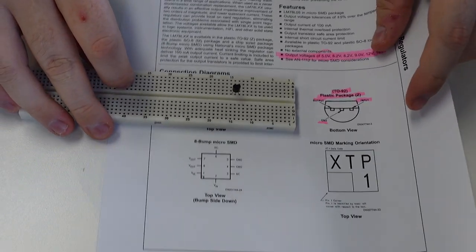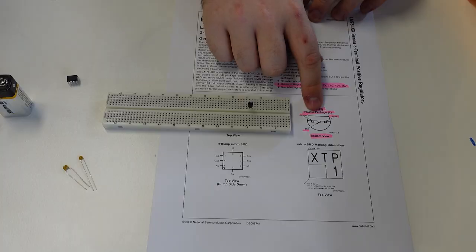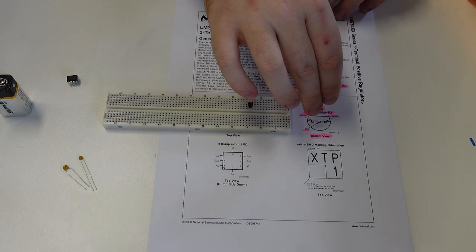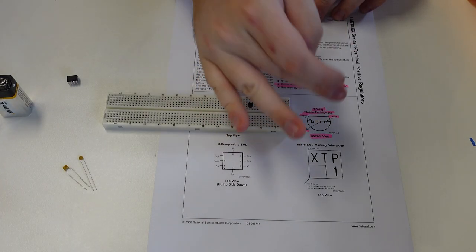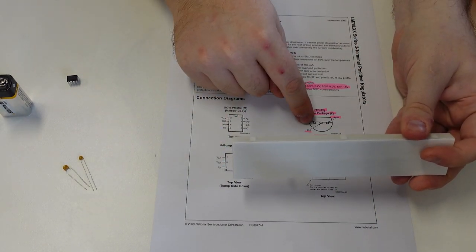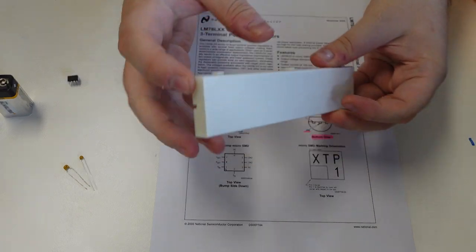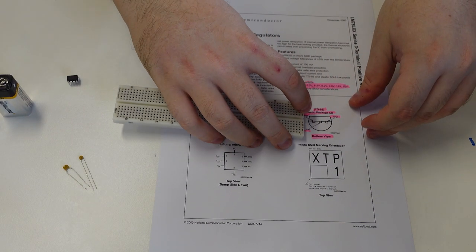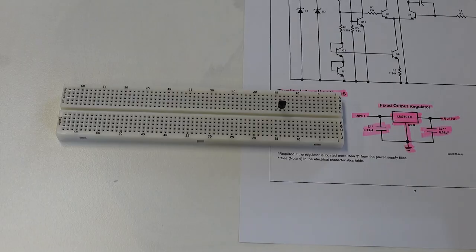And the legs would be coming out of the page here, like we had before. So when we line up this leg with this part of the breadboard, and then we flip it over, it's reversed. Okay.